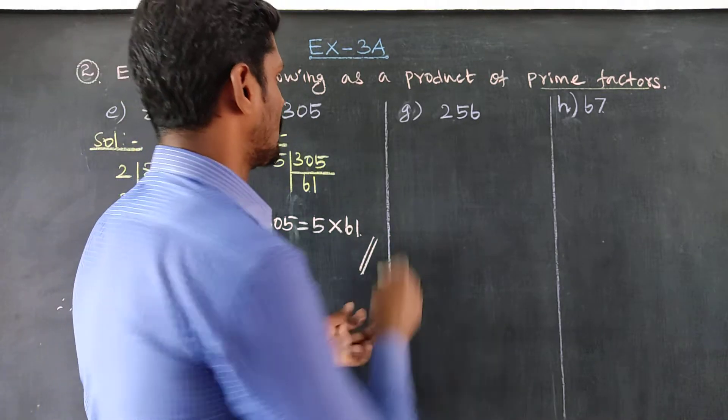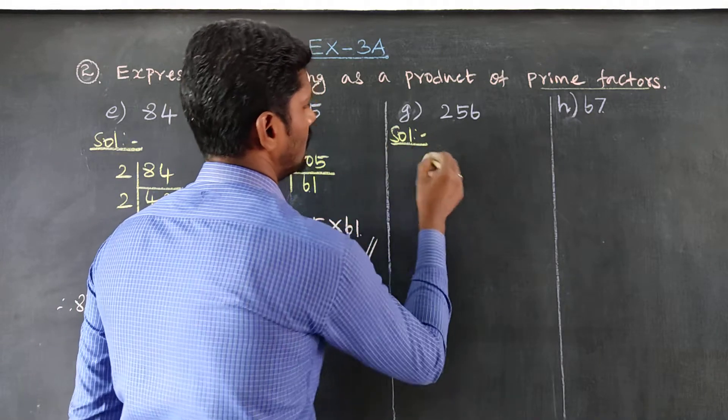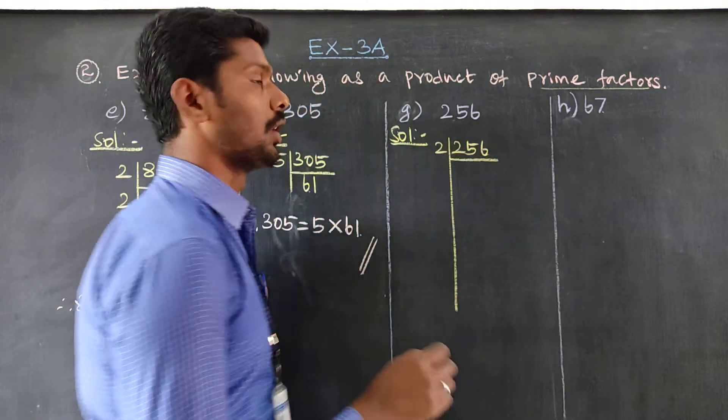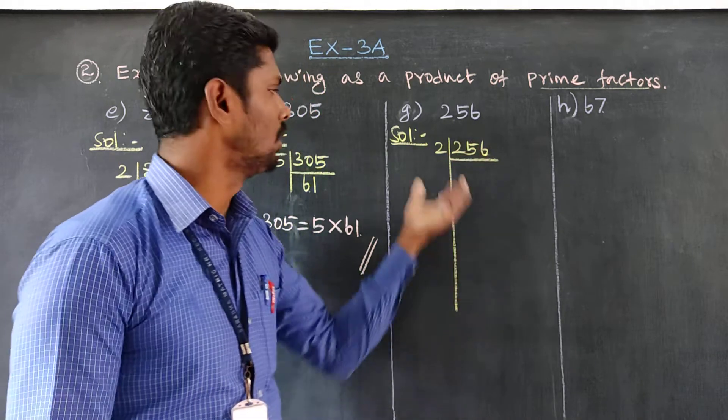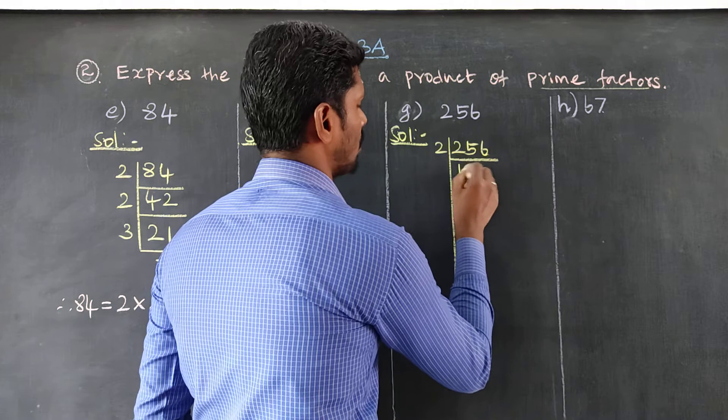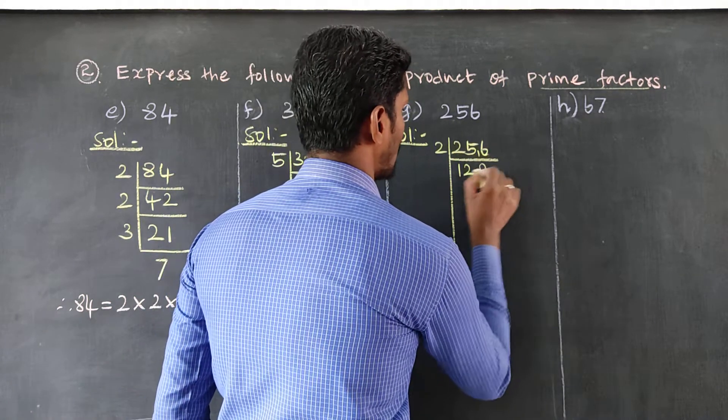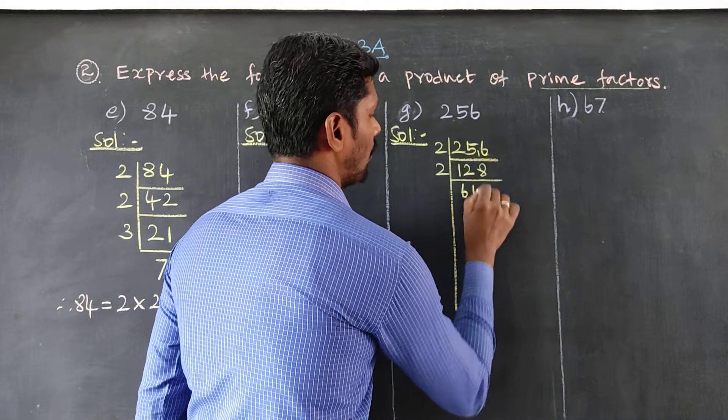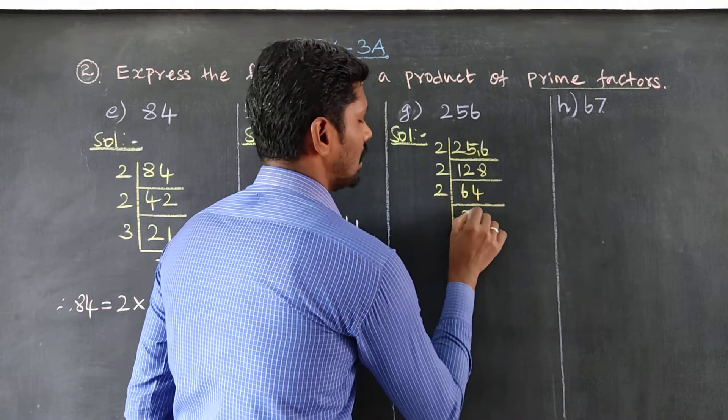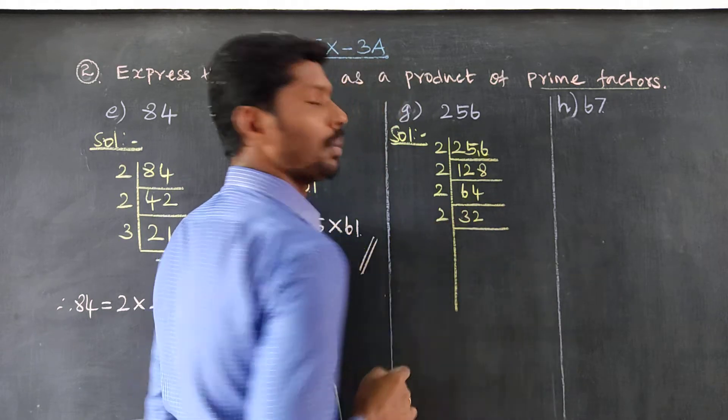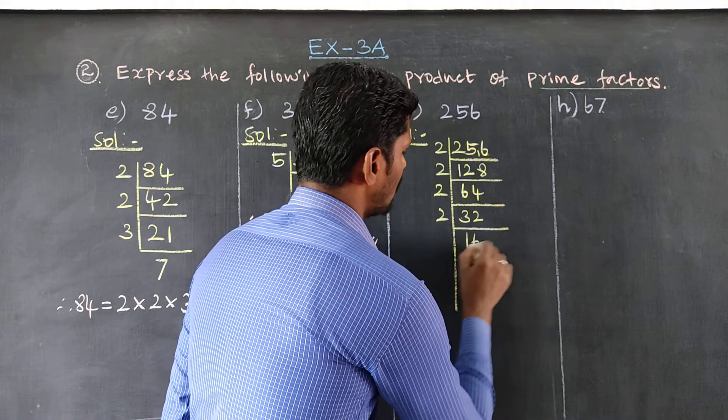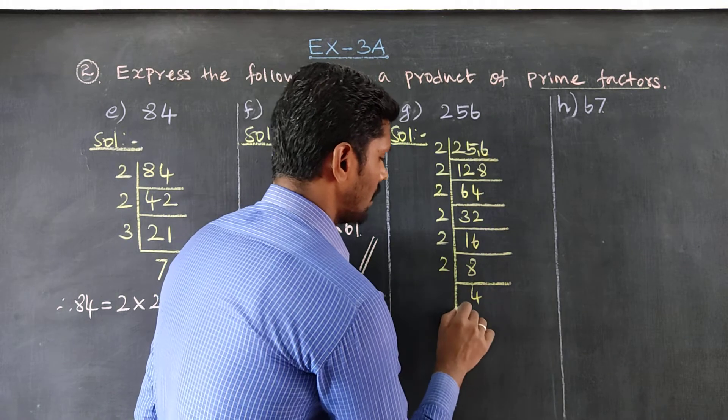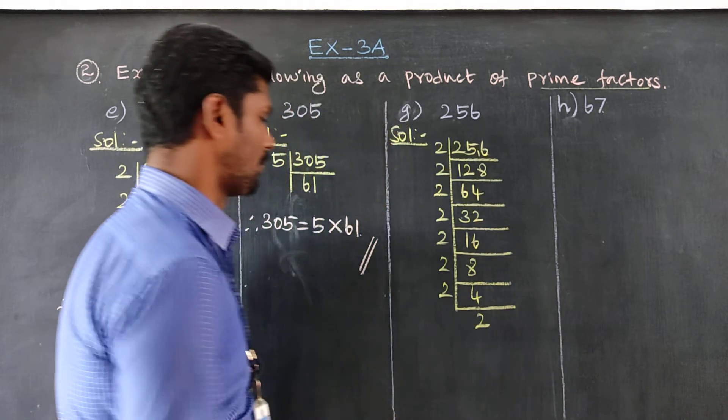Next, number 256. Since 256 is an even number, we divide by 2 repeatedly: 128, 64, 32, 16, 8, 4, 2, 1. Therefore, 256 equals 2 × 2 × 2 × 2 × 2 × 2 × 2 × 2.